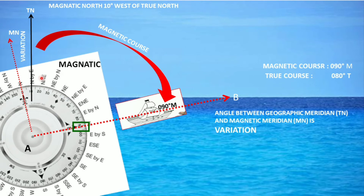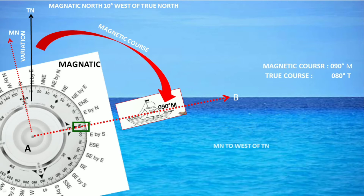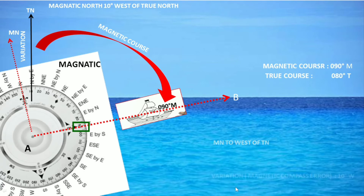Now there is a difference of 10 degrees between magnetic and true. As you can see here, true north and magnetic north — there is a difference of about 10 degrees. This difference, this angle between true and magnetic, is called the variation. Here magnetic north is to the west of true north, so we call this variation west — 10 degrees west.